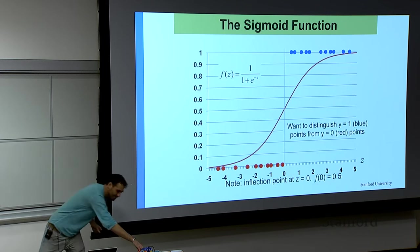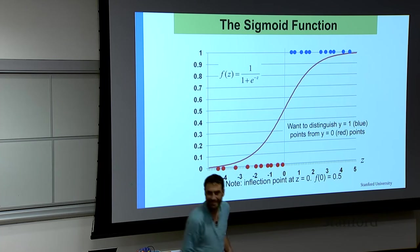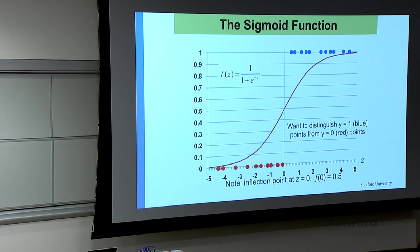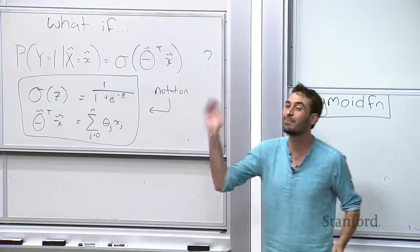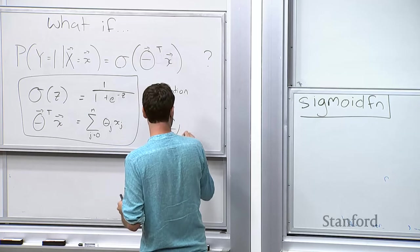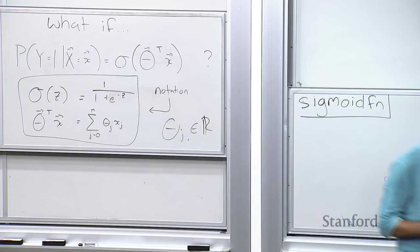The weights can be negative. If the thetas are negative, you can end up with a negative value. The thetas absolutely can be negative — they're not constrained in any way. Theta_j is an element of any real number — negative infinity to positive infinity.